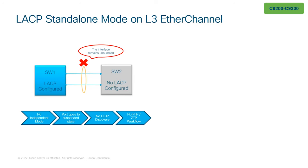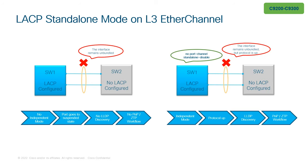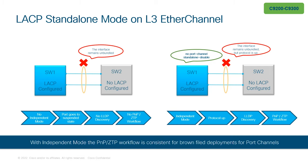Prior to 17.10, the switch architecture did not support LLDP packets to be exchanged on the interface with the protocol down. However, from 17.10, the device can now be configured in independence mode for layer 3 port channel with this feature. This makes the protocol stay up while the interface remains unbundled, allowing LLDP packet exchange for device discovery and also pushing of the configuration using PnP or ZTP.